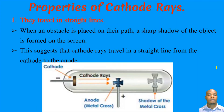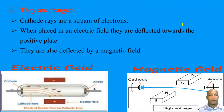Now we discuss the properties of cathode rays. The first property is that they travel in straight lines. When an obstacle is placed on the path of cathode rays, a sharp shadow is formed on the screen, which is evidence that cathode rays travel in straight lines. The second property is that they are charged. If cathode rays are exposed to an electric field, they are deflected toward the positive plate.